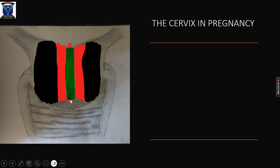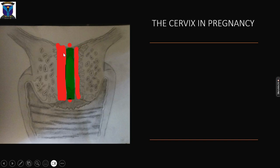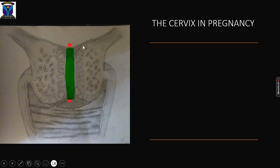The cervical canal ends caudally as the external os and cranially as the internal os. Measurement of the cervix should be in a straight line from the internal to the external os. It is extremely important to appreciate the cervical mucosa, because contractions can come and go during an ultrasound scan, causing the lower segment to thicken and the cervix to appear falsely long. You must follow the cervical mucosa to where it ends — beyond that point is contraction, not cervix.